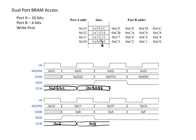Moving on to the next clock edge, since this is write-first, we look for any writes occurring. Port A is writing to address 32, so the entire contents at that address are going to be replaced with 0x9753. Since we're also reading this address at the same time, we read out this value. Port B is reading from address CF, which has a value of 0xF.